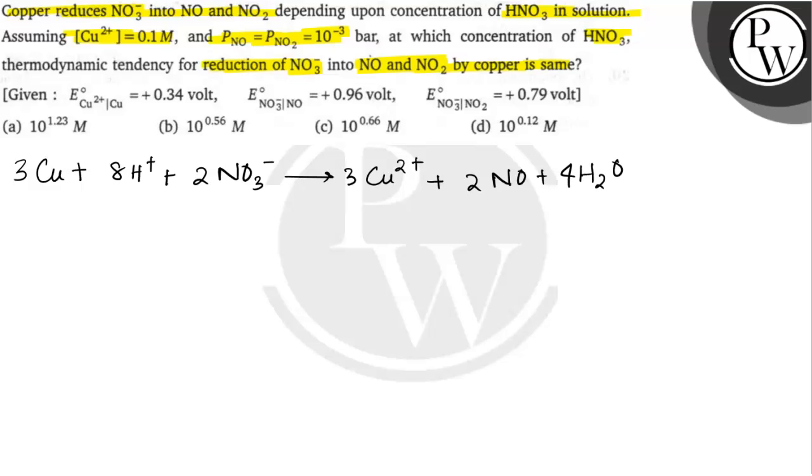Second equation kya hoga? That would be Cu plus 4 H plus plus 2 NO3 minus will give rise to Cu2 plus plus 2 NO2 plus 2 H2O.